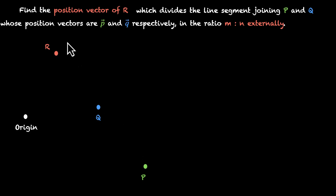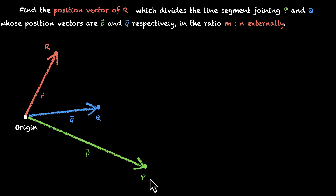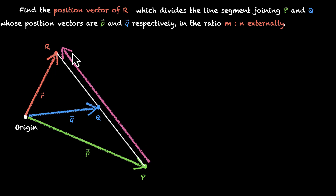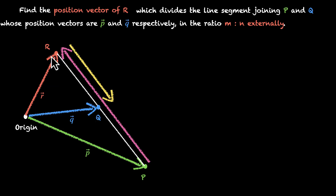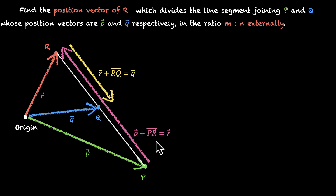This is the p vector, this is q vector, and this is the r vector. This is the line segment pq, and if you extend it you reach r. Drawing the same two vectors, we have pr vector and rq vector coming back in the opposite direction. Writing these in terms of p, q and r: in the smaller triangle, r vector plus rq vector equals q vector; and in the bigger triangle, p vector plus pr vector equals r vector. These two equations are identical to the ones in internal division.